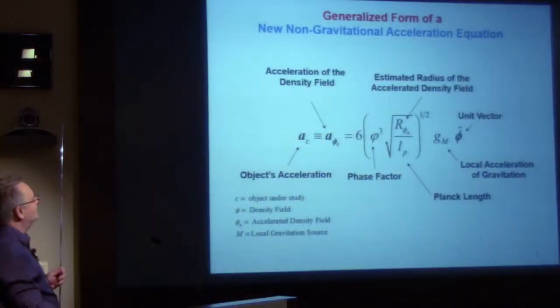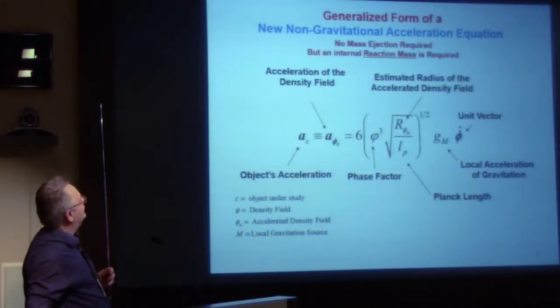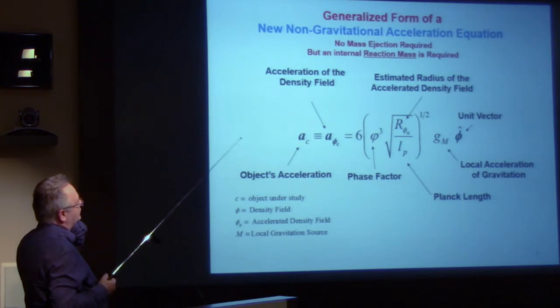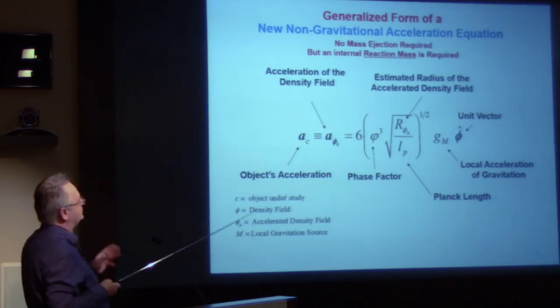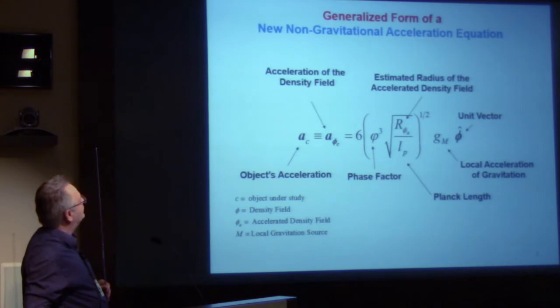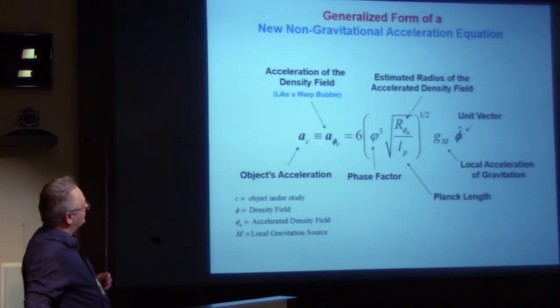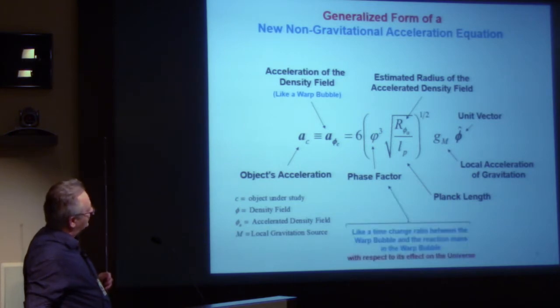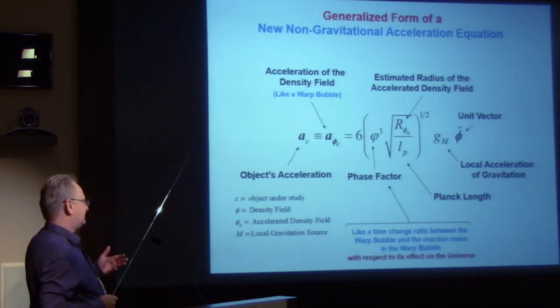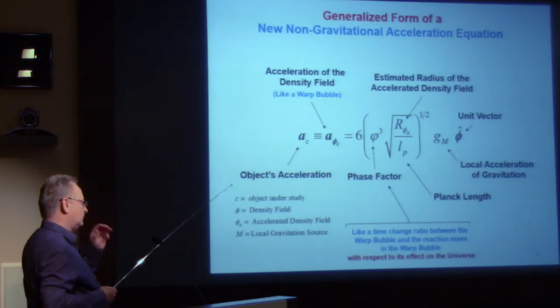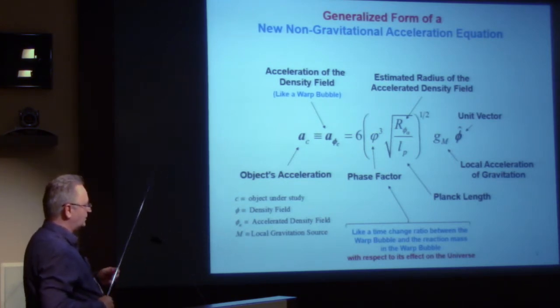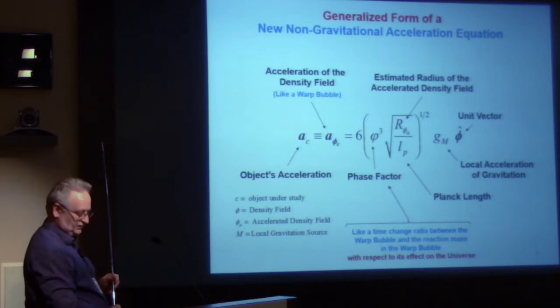I just want to throw this out because usually by the time I get to this equation, I've had so many arguments about the theory that I don't ever get to the equation. This equation doesn't require any mass to be ejected, but you do have to have a reaction mass. The density field is kind of like a warp bubble. This phase factor is kind of like a time change ratio between the warp bubble and the reaction mass within the warp bubble with respect to the effects on the universe itself.